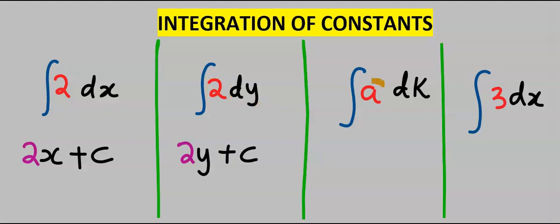Next, we are going to integrate this constant a with respect to k, and we are going to have ak plus c.